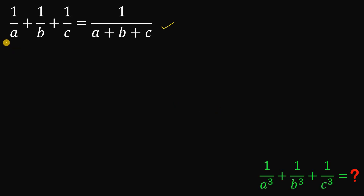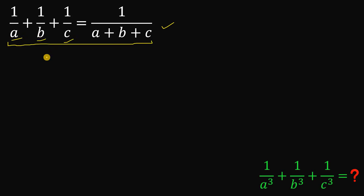Now, to answer this, let's observe our equation. Take note that A, B, and C cannot be equal to 0 — otherwise this equation is undefined. So A, B, and C are not equal to 0.